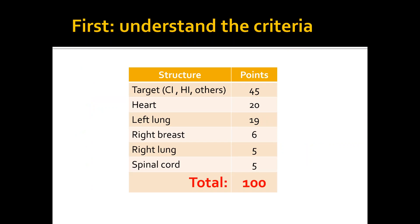The first thing I did was to try to understand the criteria. I have made up this table of structures and points. So the target has 45 points, heart 20 points, left lung 19 points, right breast 6 points, right lung 5 and spinal cord 5. We can see that in the first three structures, 84% of the points are there. So this helps you to prioritize your optimization objectives.